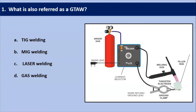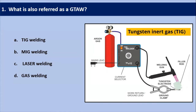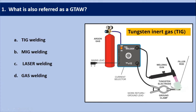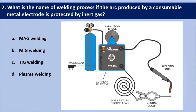GTAW is nothing but gas tungsten arc welding, which is also called TIG welding. TIG welding means tungsten inert gas welding, in which a non-consumable electrode is used, and inert gas — argon or helium — is used to keep contamination away from the metal surface. That's why the answer is TIG welding.